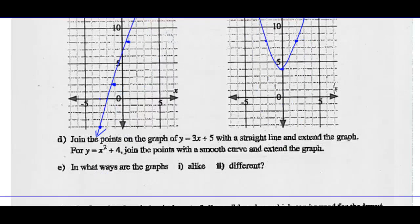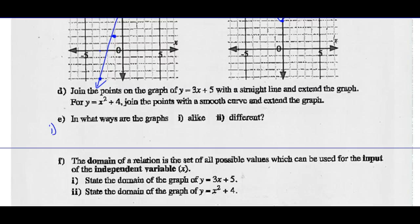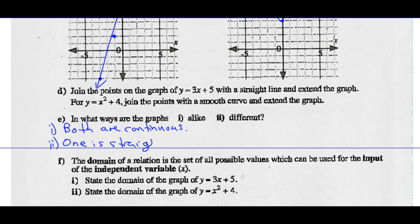Let's look at the two graphs and ask: in what ways are they alike and in what ways are they different? They are alike in that both can be drawn with a nice continuous line or curve — so both are continuous. How are they different? Well, obviously one is a straight line and the other is curved.